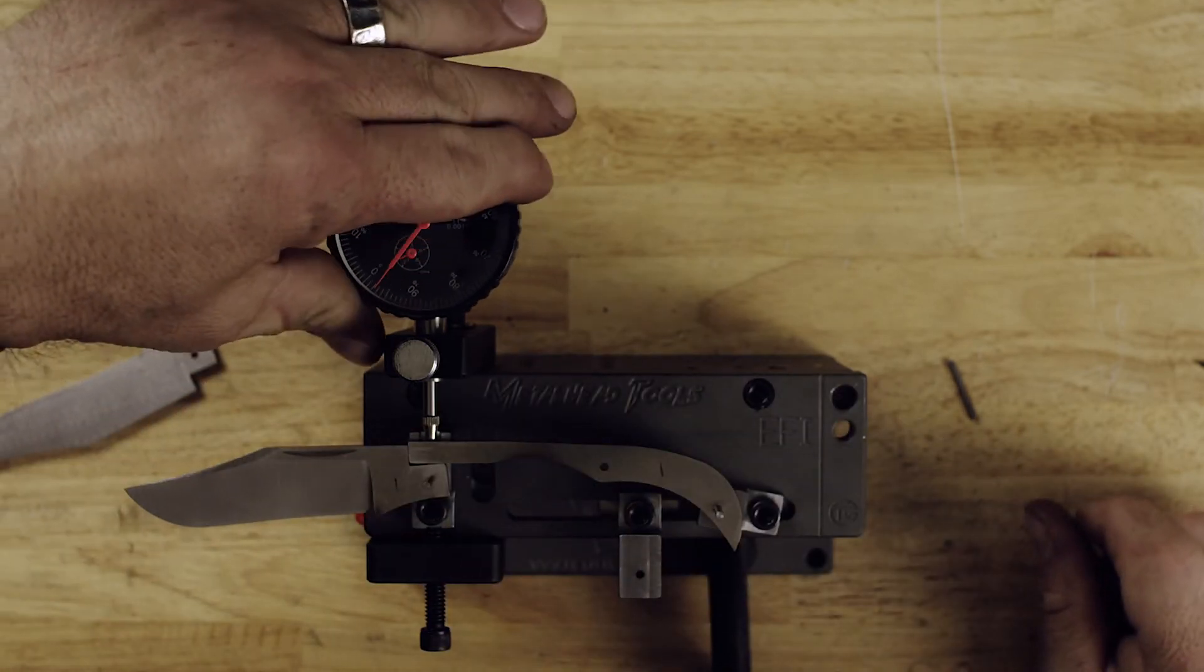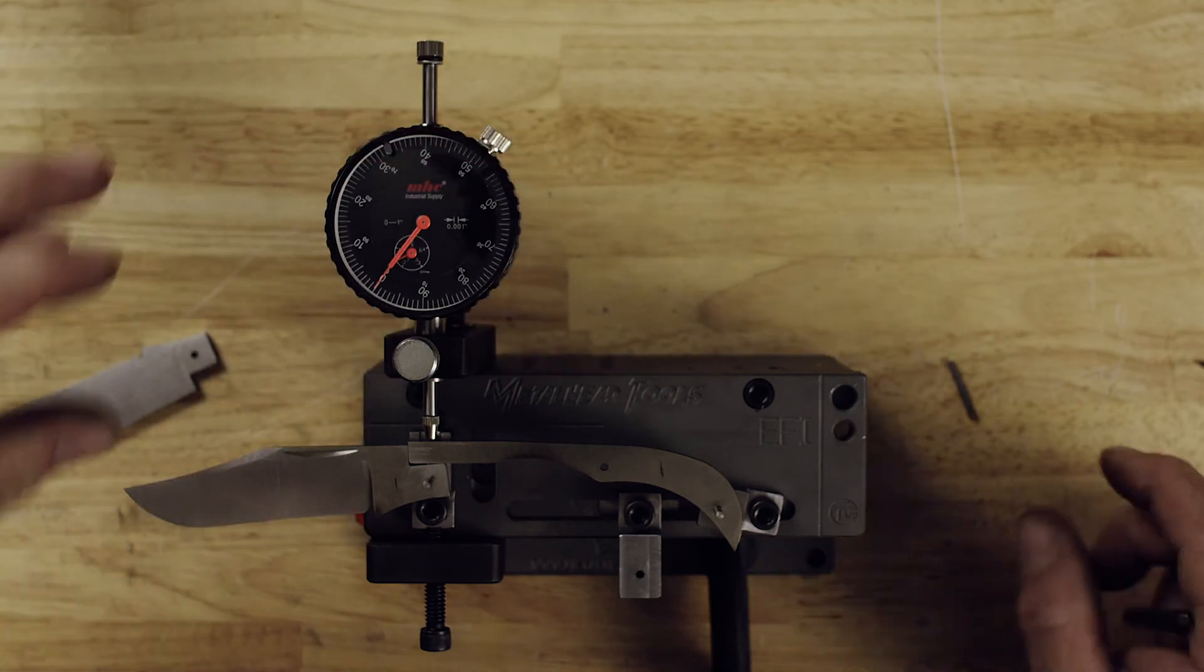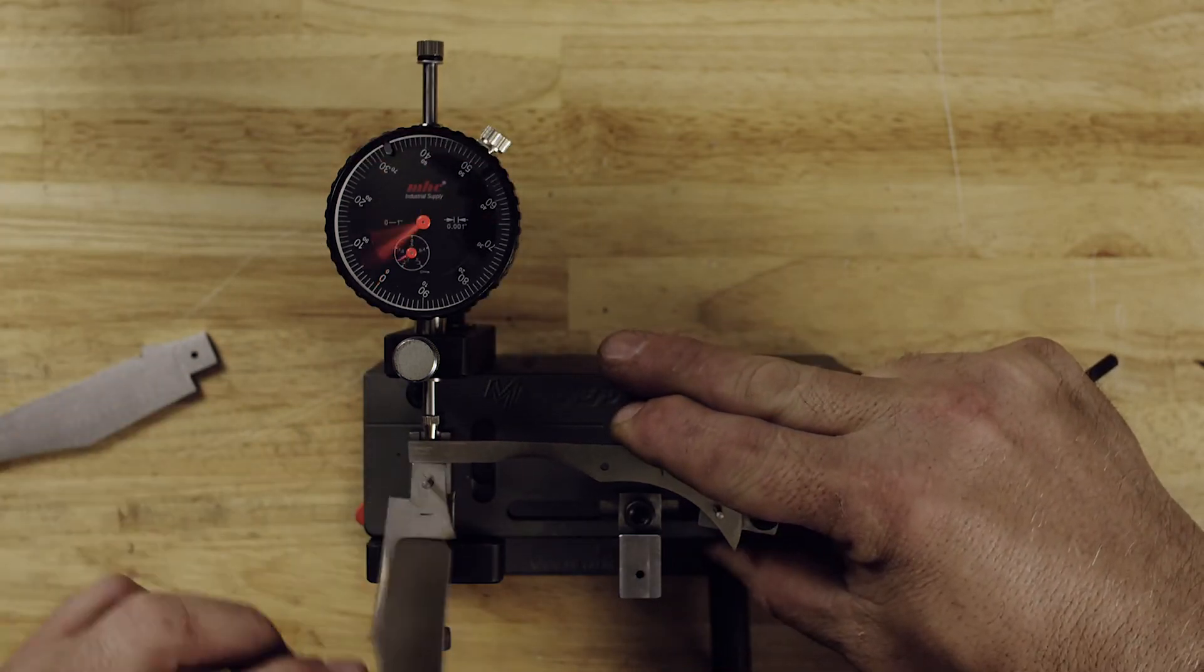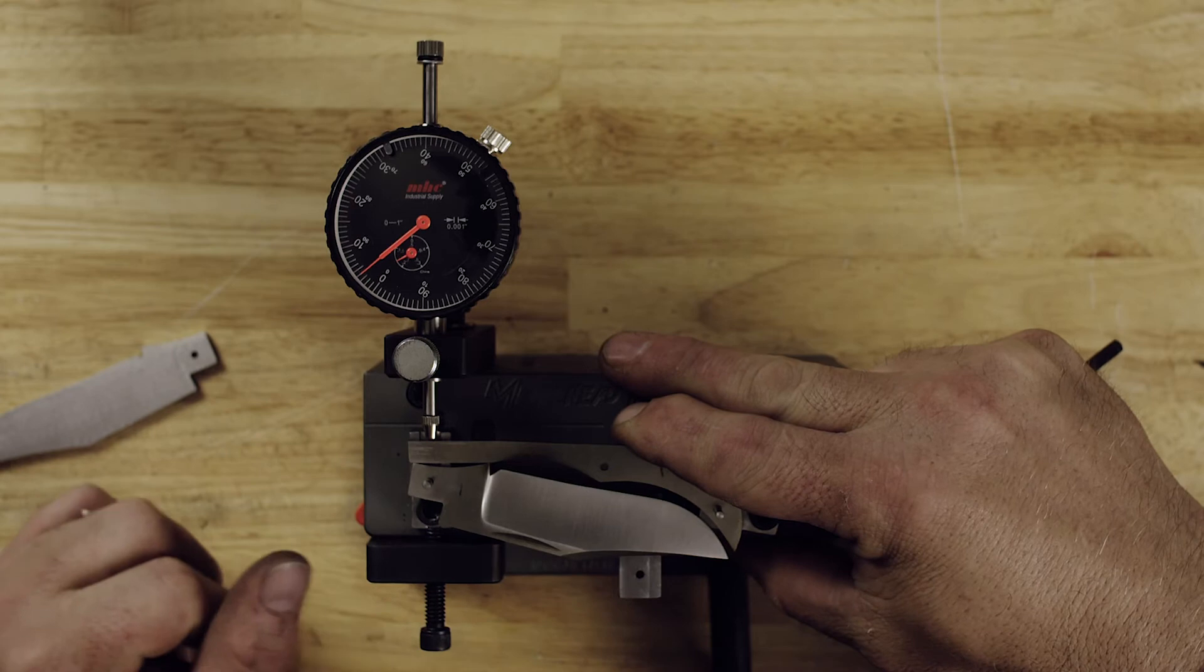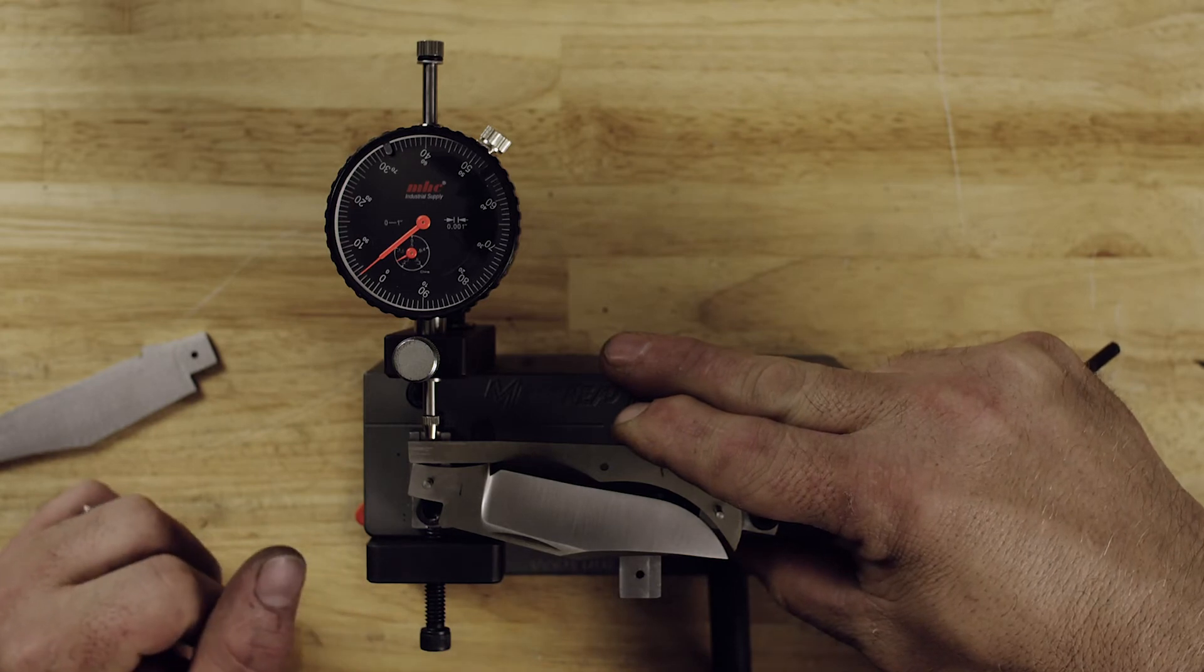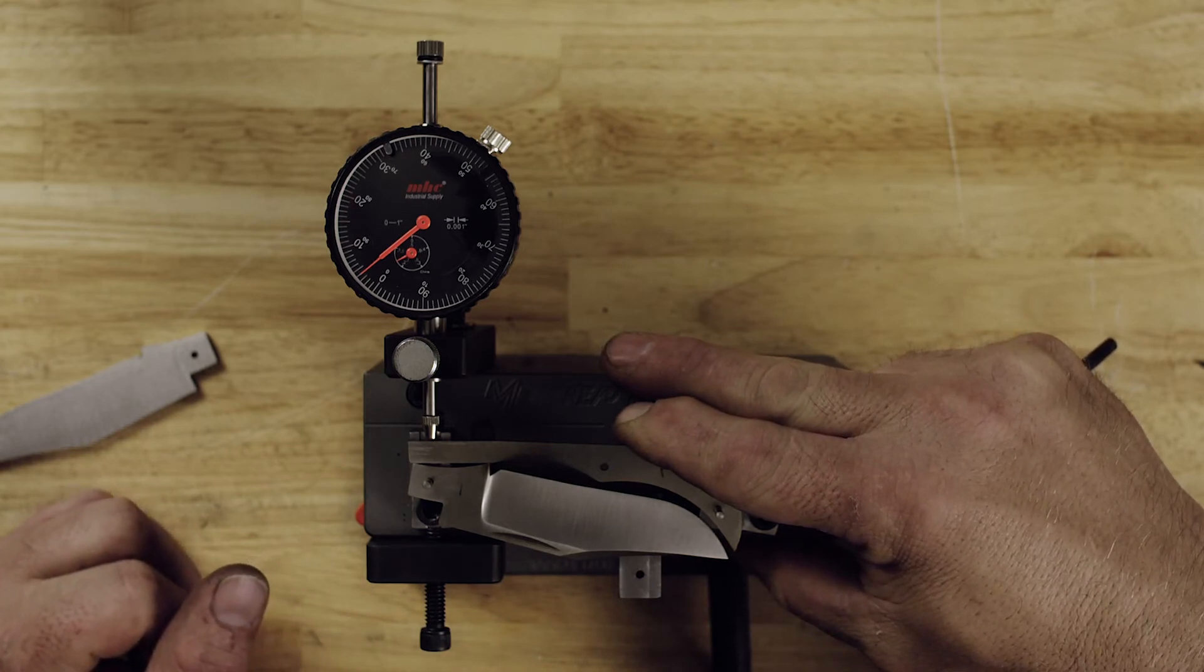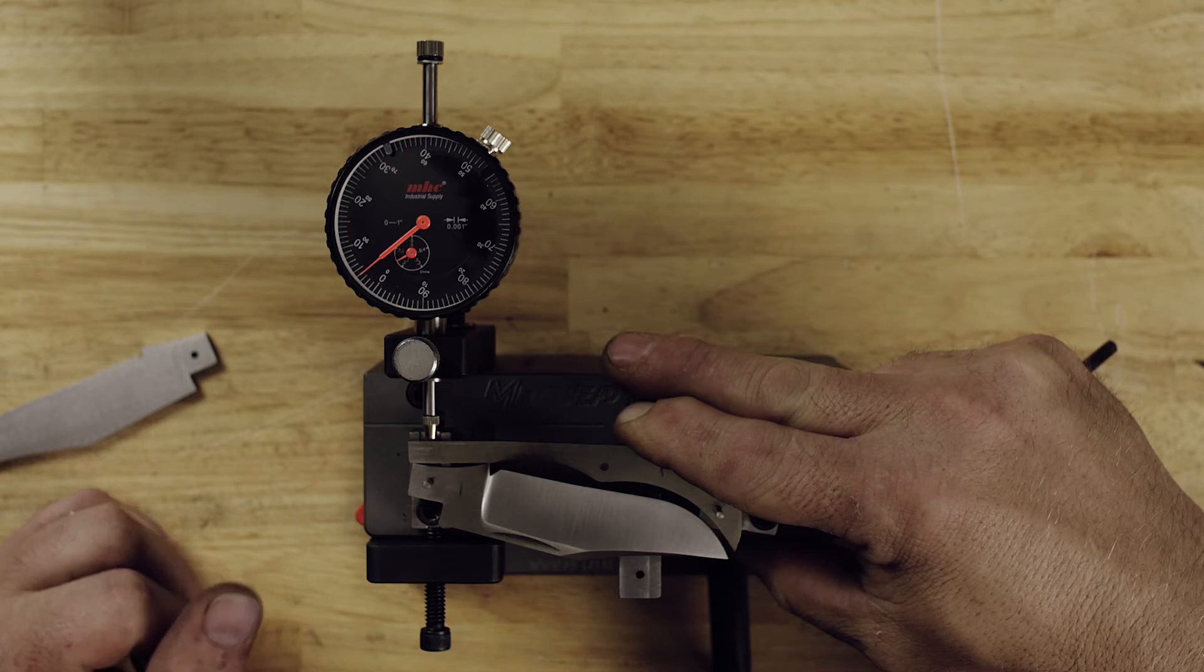Now in theory, let's say you're a couple thousandths off. We're going to set the dial indicator at zero, you're at two, and you're at three. You can actually dial this thing down to zero, zero, and zero, which we'll get into in a little bit.